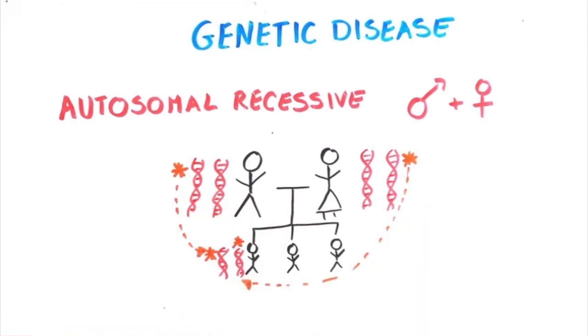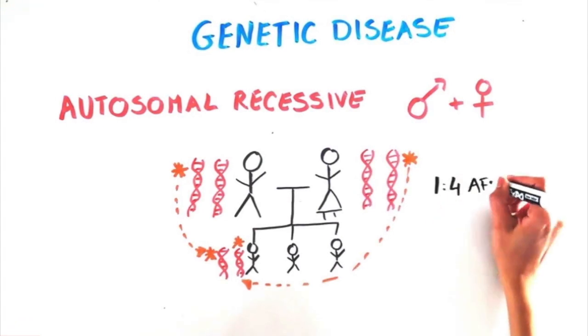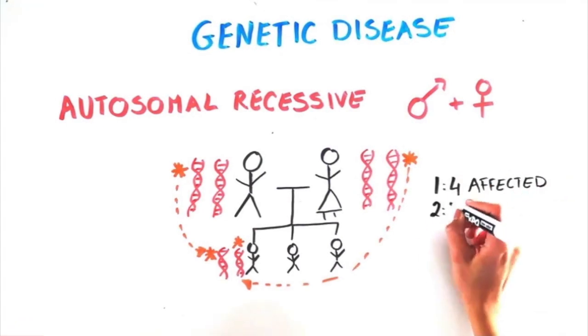Since each carrier parent has one good and one bad copy of the gene, each child has a 1 in 4 chance of being affected, with a 2 in 4 chance of each child being a carrier.